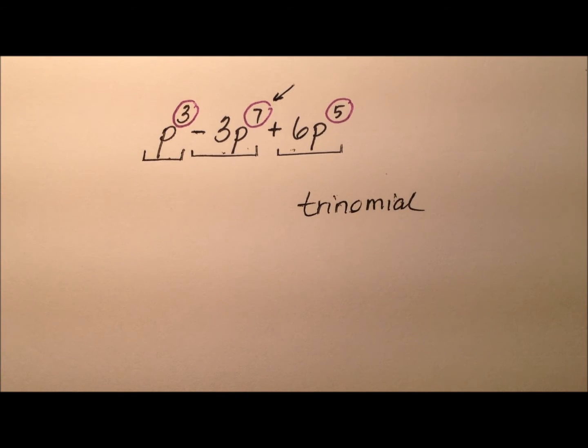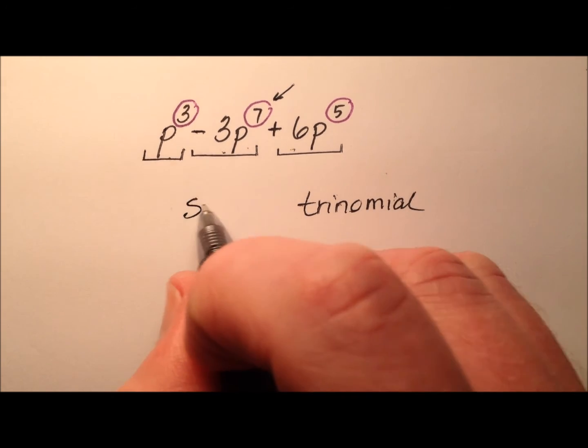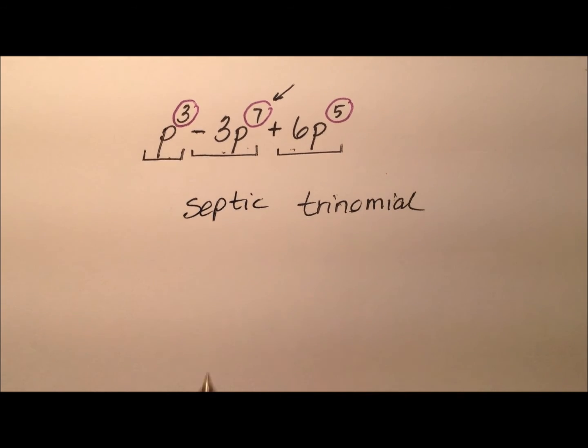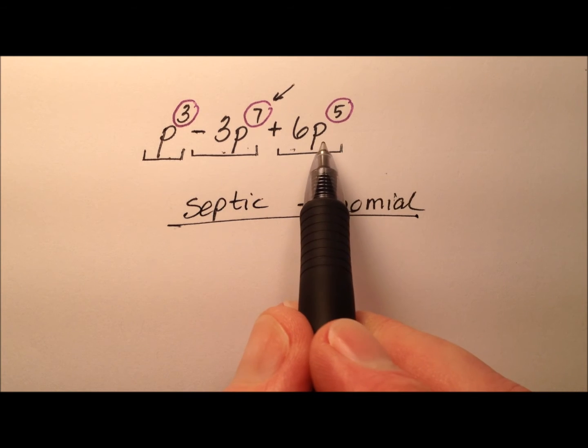I would say 7. Okay, so what's the classification for something of degree 7? Well, it's going to be septic. So we have a septic trinomial right here. And let's go ahead and write it in standard form.